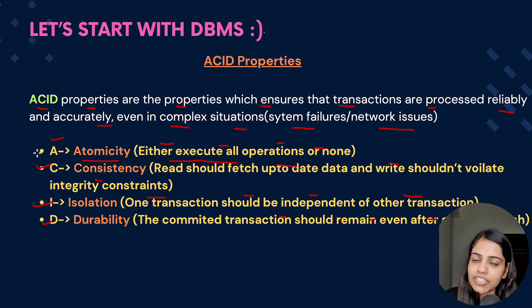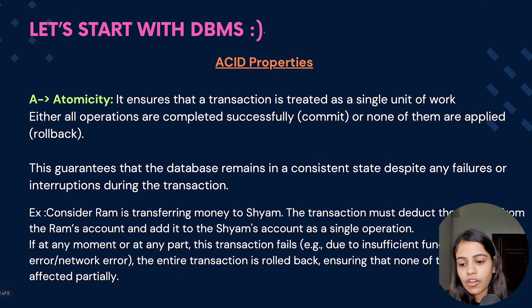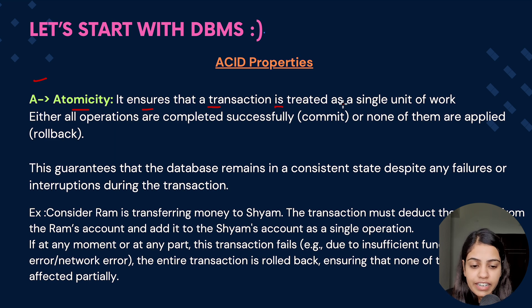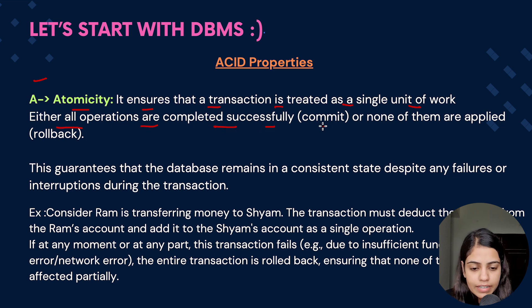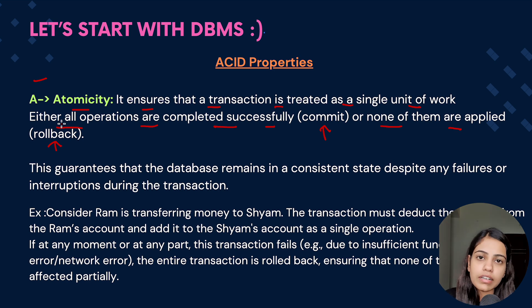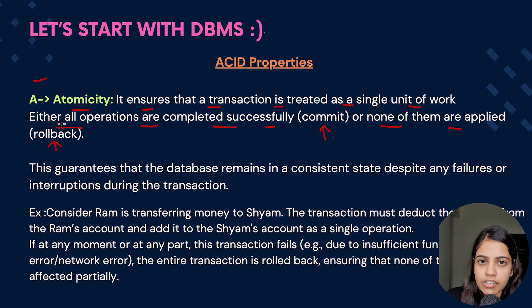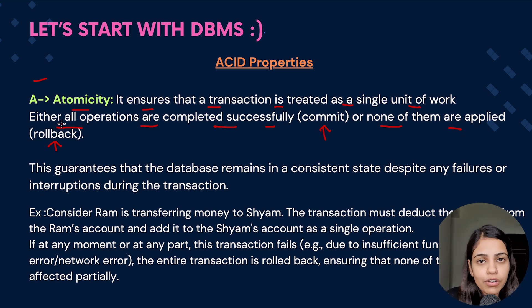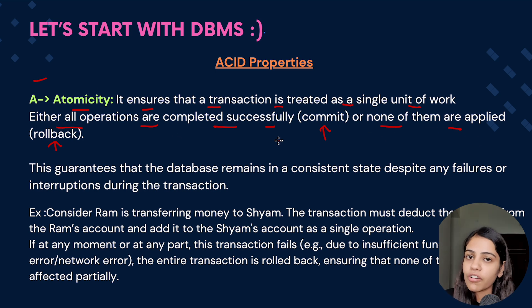Let's learn about each in depth. Starting with A, that is Atomicity. It ensures that a transaction is treated as a single unit of work — either all operations are completed successfully (commit) or none of them are applied (rollback). If at any point there is any failure encountered in the transaction before the commit, we perform a rollback, reverting it back to its original state.